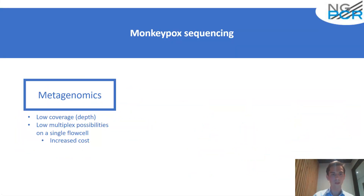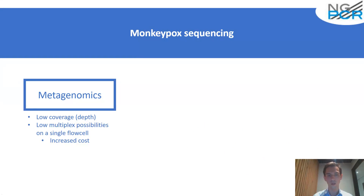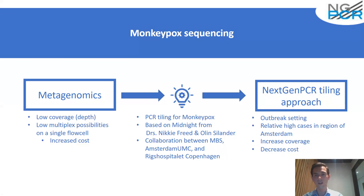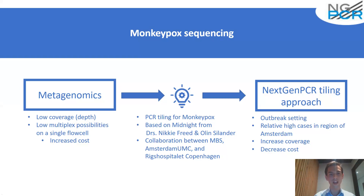The methods used for monkeypox sequencing were mainly metagenomics. It was working, but coverage was quite low, which limits the number of samples you can multiplex on a single flow cell, increasing the cost. We thought: what if we can use PCR tiling for monkeypox, based on knowledge from the Midnight Protocol and SARS-CoV-2 sequencing from Nikki Freed? We collaborated with Amsterdam University Medical Center and Martin Schou-Pedersen from the Ritz Hospital in Copenhagen to develop a NextGen PCR tiling approach that would give faster, timely, and higher-throughput sequencing data.